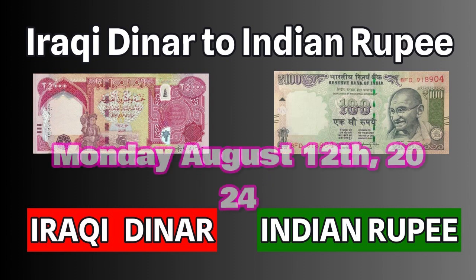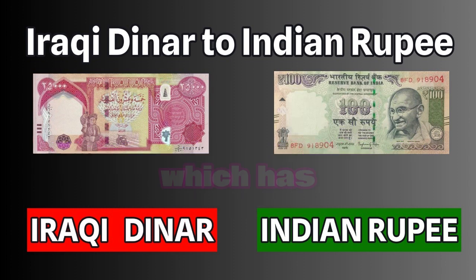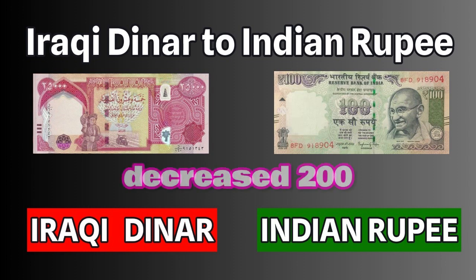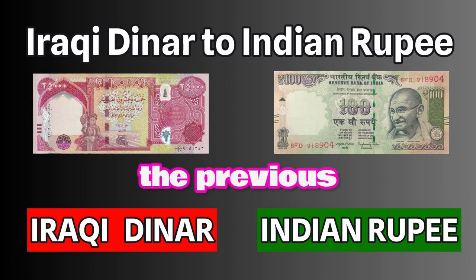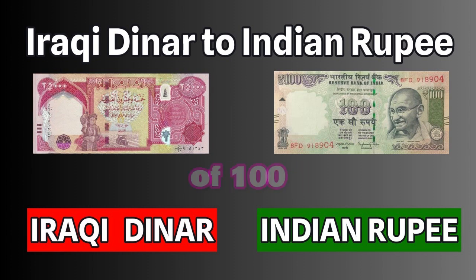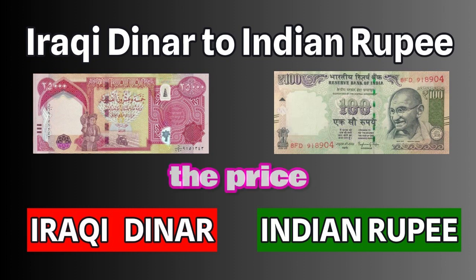The price of 100 Iraqi dinar today, Monday, August 12, 2024, is in the 39,850 riyal market, which has decreased 200 riyals — 0.5% — compared to the previous day. Each unit of 100 Iraqi dinar is sold at the price of 40,050 riyals.